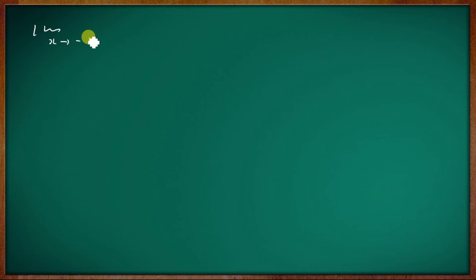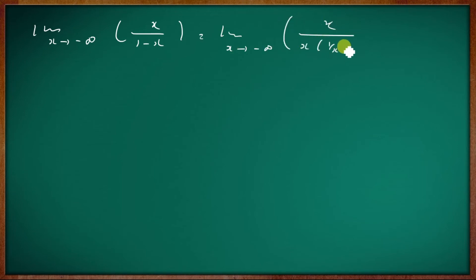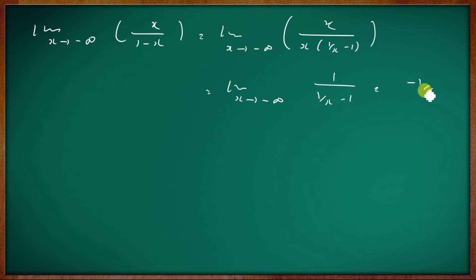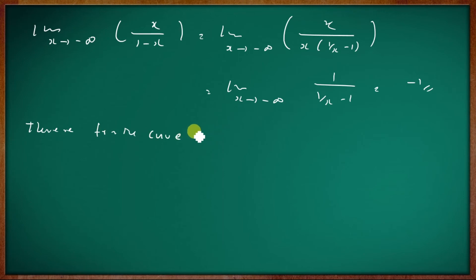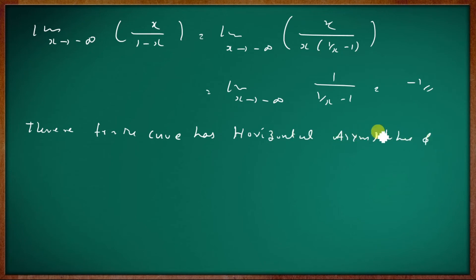The limit as x tends to minus infinity of x by 1 minus x, evaluating gives minus 1. Therefore, the curve has a horizontal asymptote and it is the line y equal to minus 1.